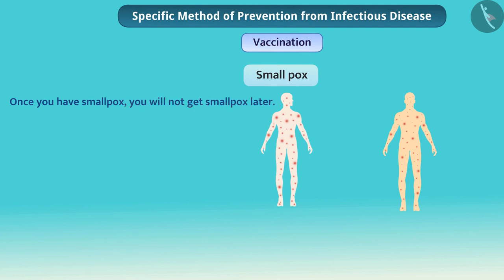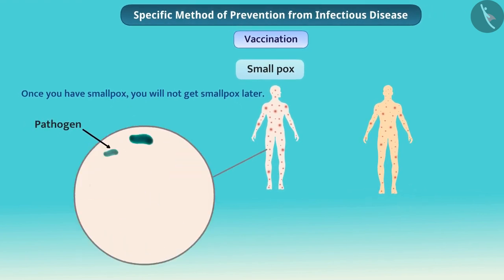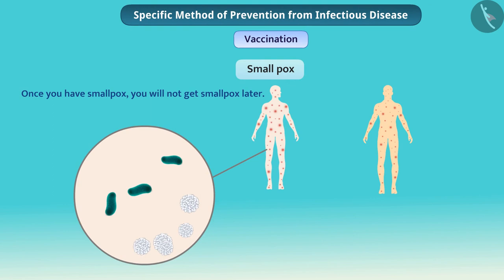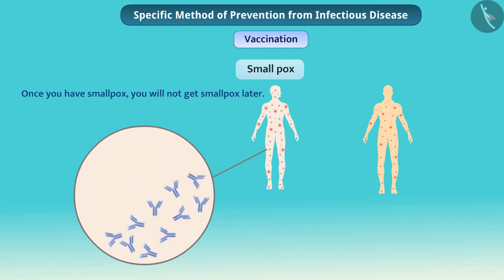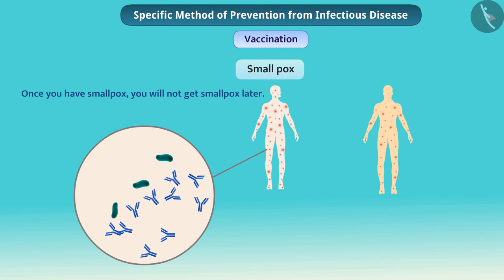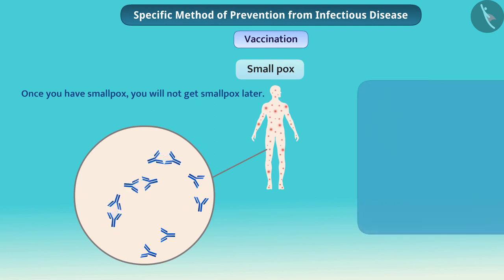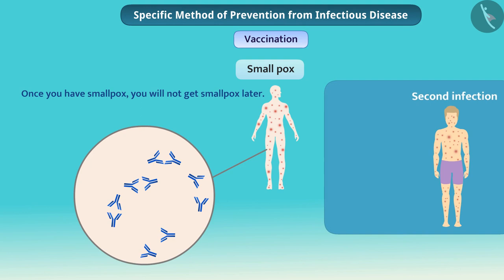This is because when the pathogen first invades, the immune system reacts to the pathogen and remembers the specific reaction. In this way, when such a microorganism or a similar microorganism enters the body again, the immune system destroys the microorganism with full energy. Therefore, the second infection ends more quickly than the first infection.